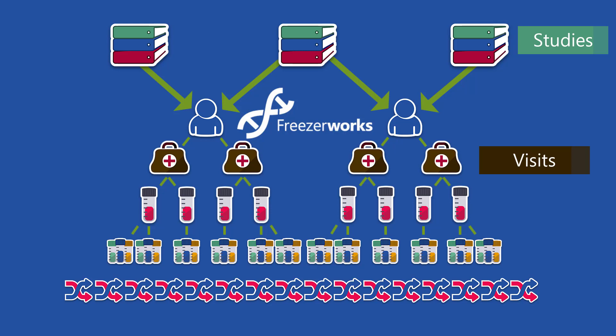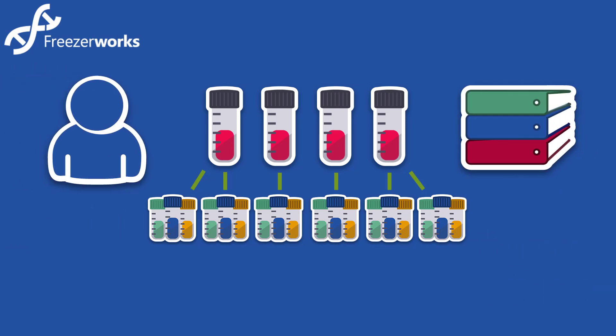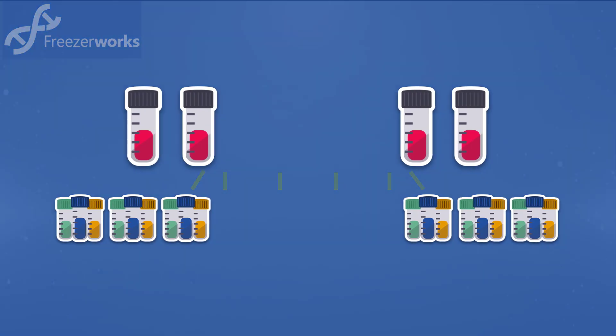For help implementing study management, see our seven-part video series. And that does it for today's video on the Freezerworks hierarchy. Hopefully now you have a better understanding of how the different record tables relate and interact with each other, what samples and aliquots in Freezerworks represent, and how patients and studies fit into it all. We want to help you configure your system, so please, if you have any more questions, don't hesitate to contact your support rep. Doing it right the first time is always easier than fixing things down the road. Thanks, as always, for watching, and see you next time.